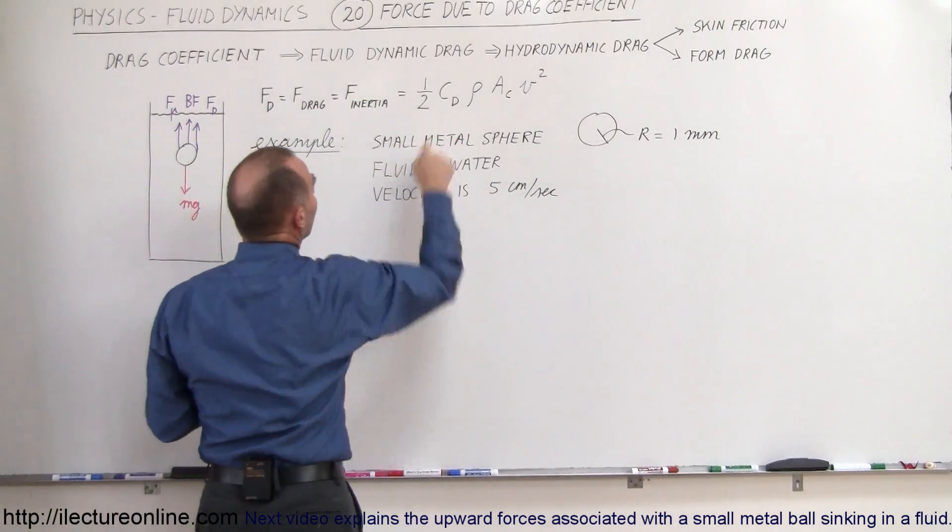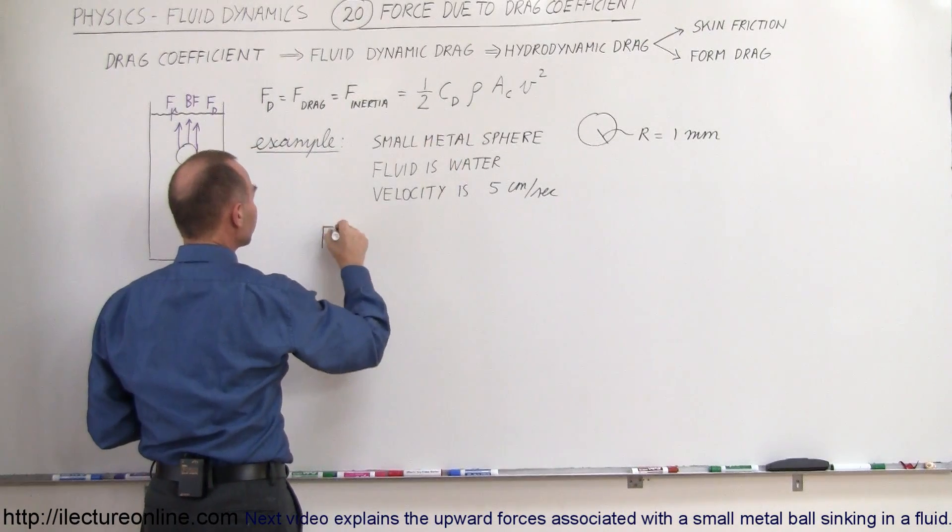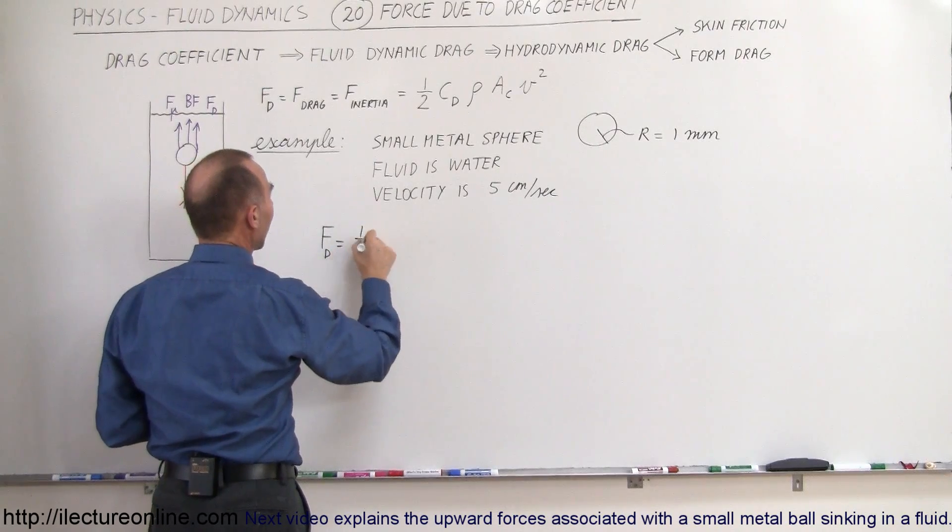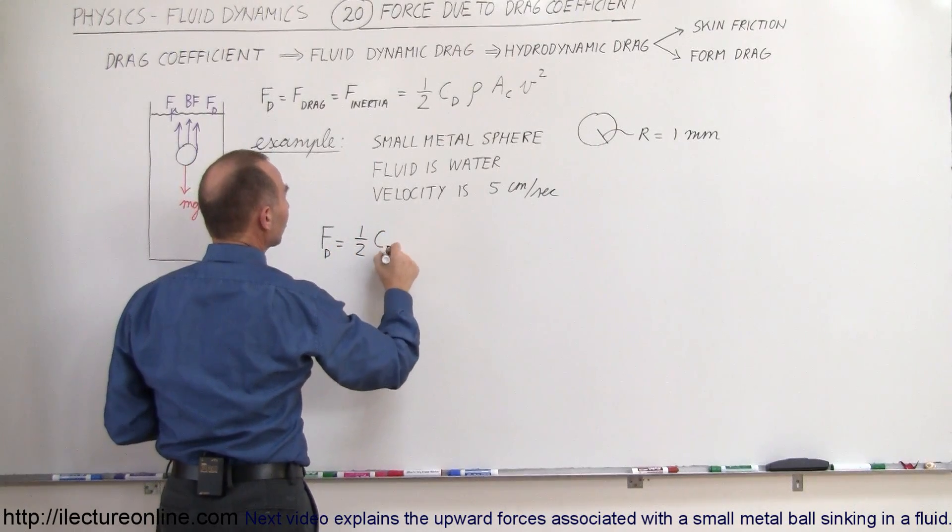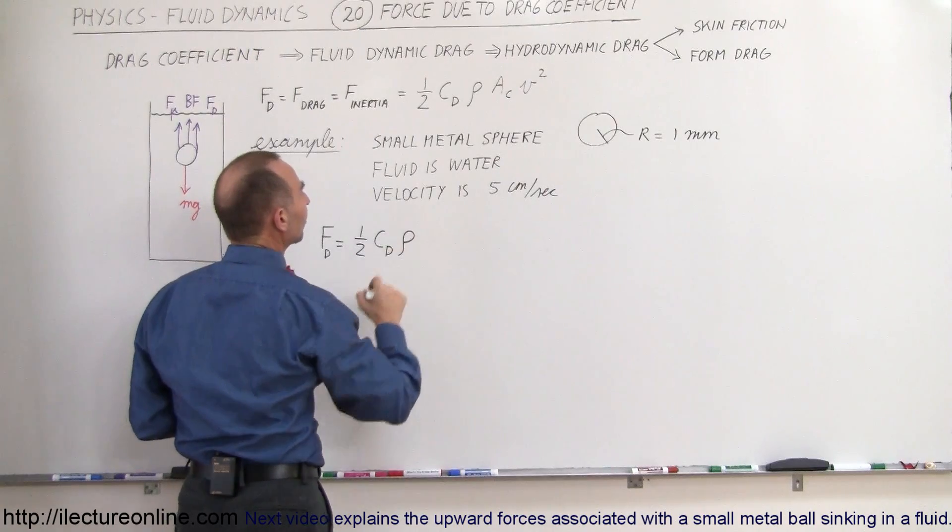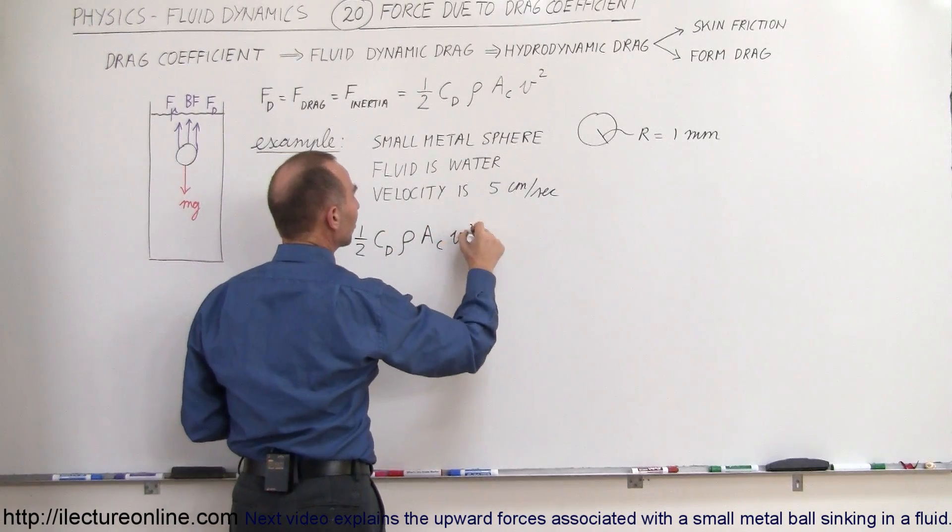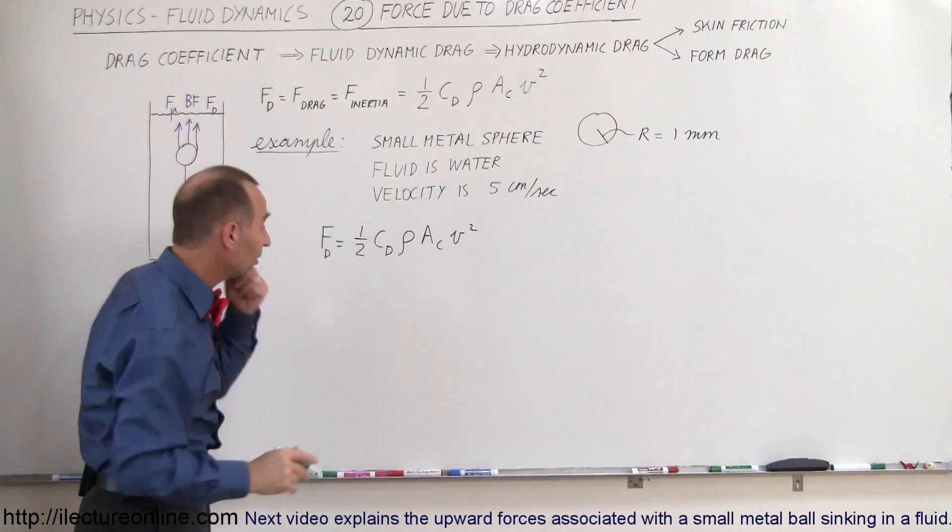Well the equation is right here, so that means that the force caused by the drag coefficient is equal to one half times the coefficient, times the density of the fluid, times the cross sectional area, and times the velocity squared. So plug in some numbers and let's see what we get.